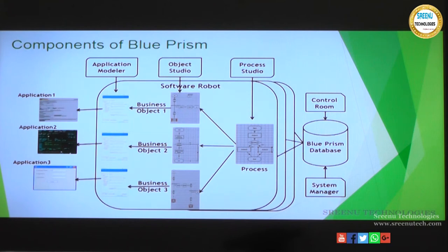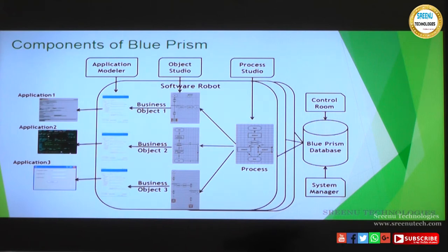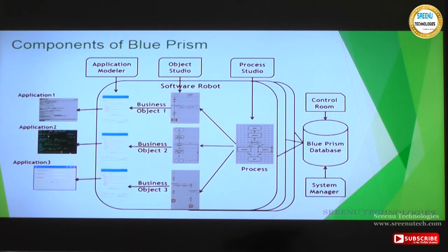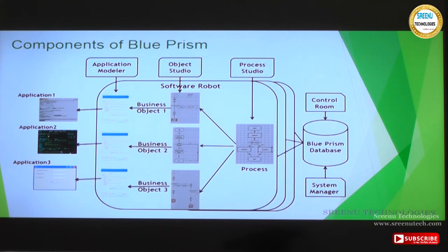The application modeler stores the address details of the application — where the input box is, where the drop-down is, what is its name, what is its HTML path, what is the HTML ID. All these details stored in the application modeler are used by the object studio. Together, the business object and the process become a software robot.